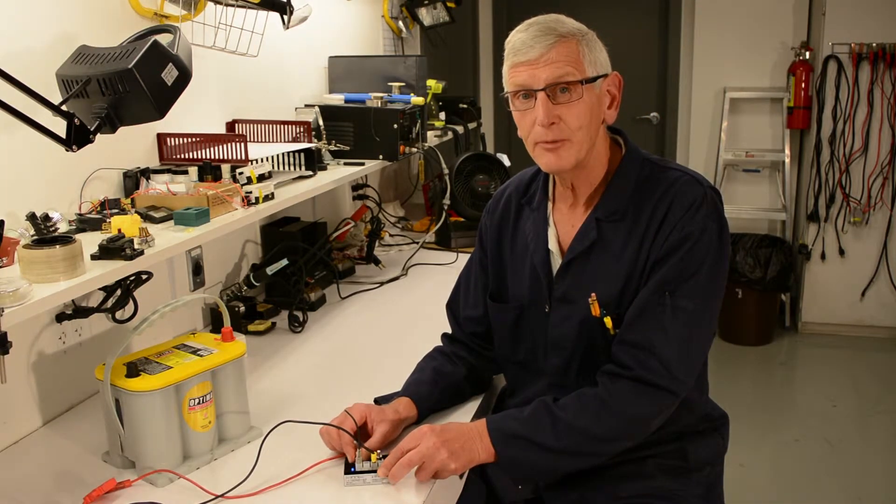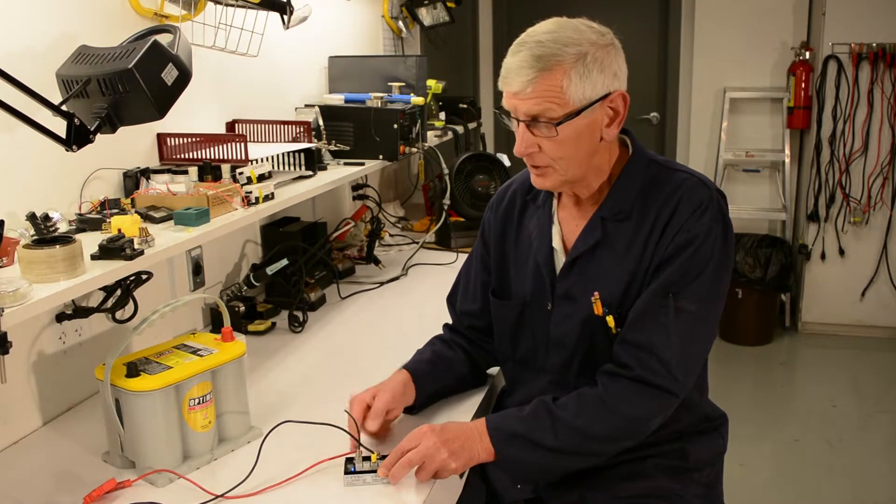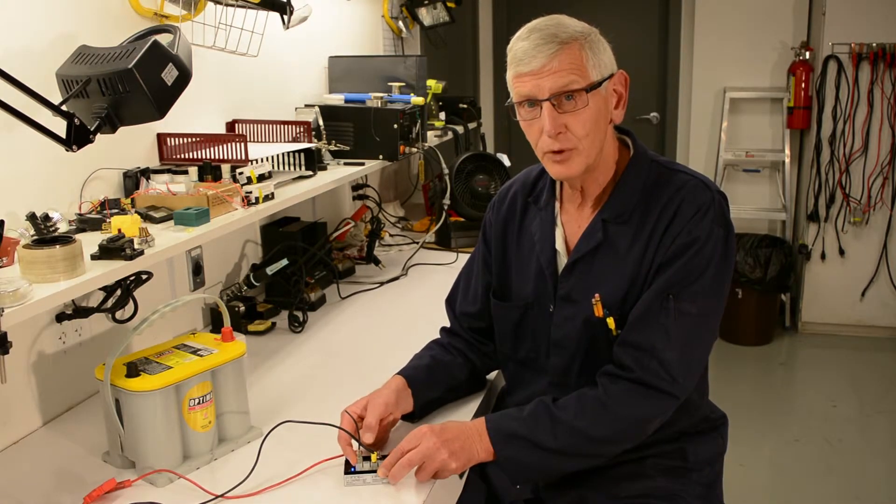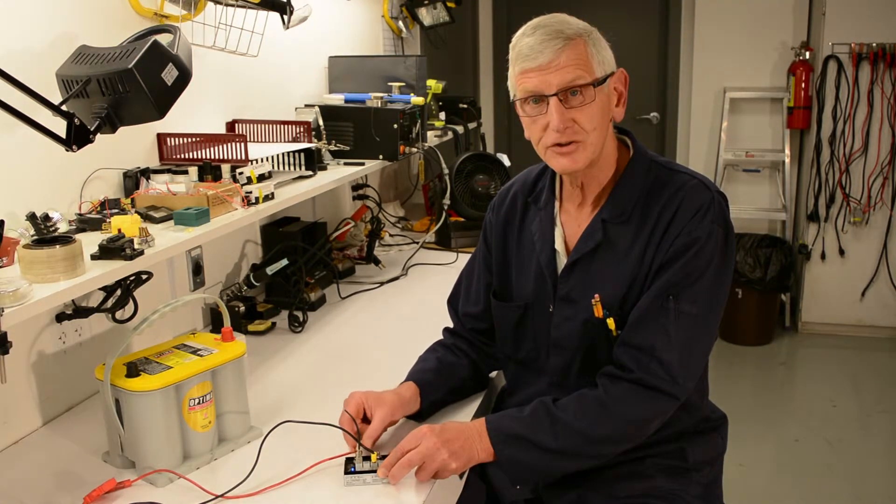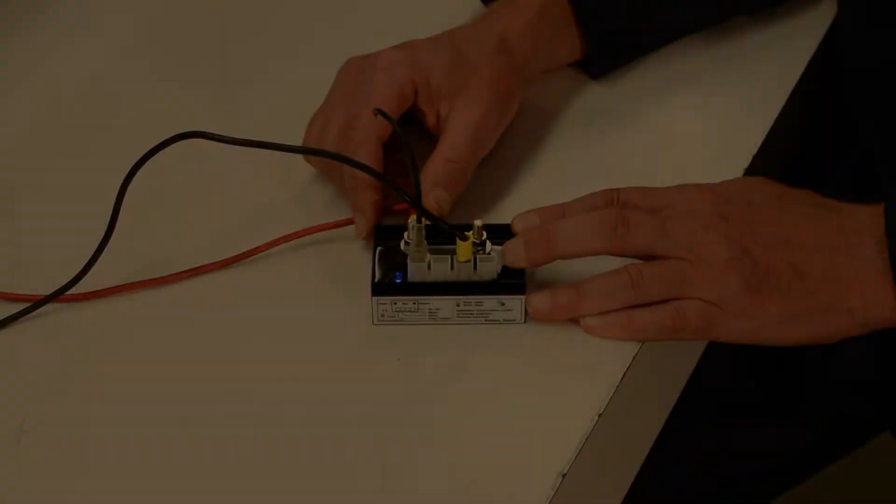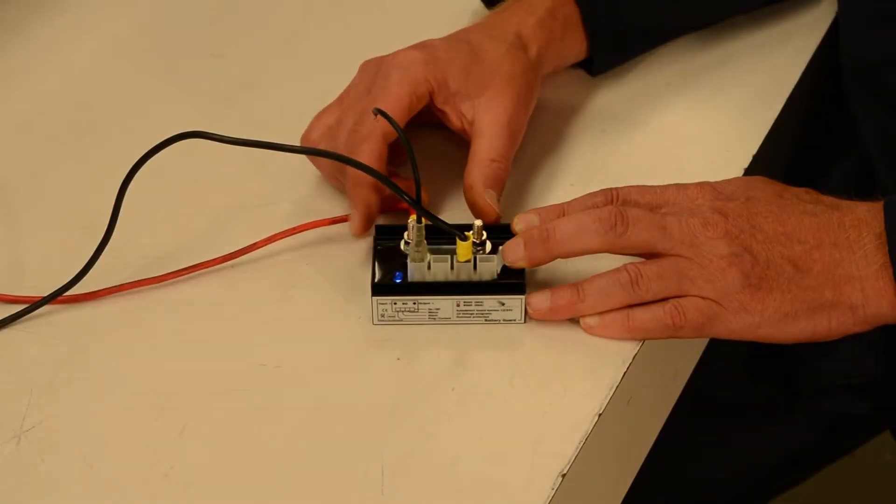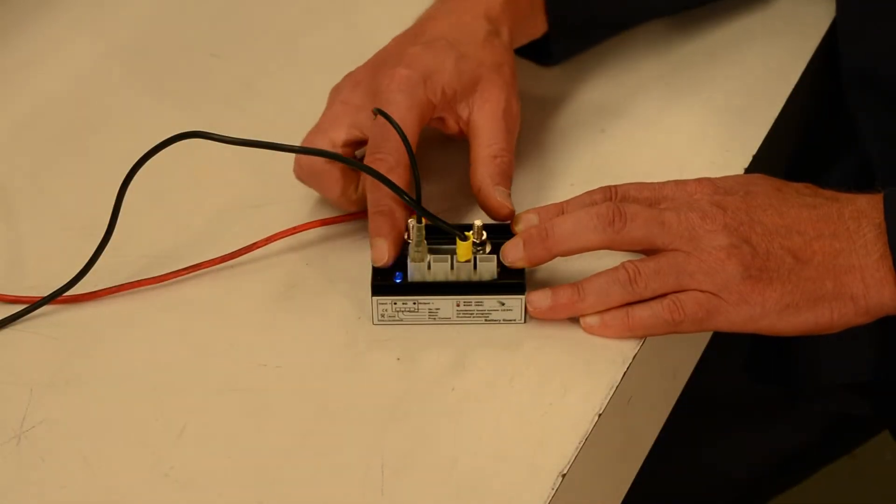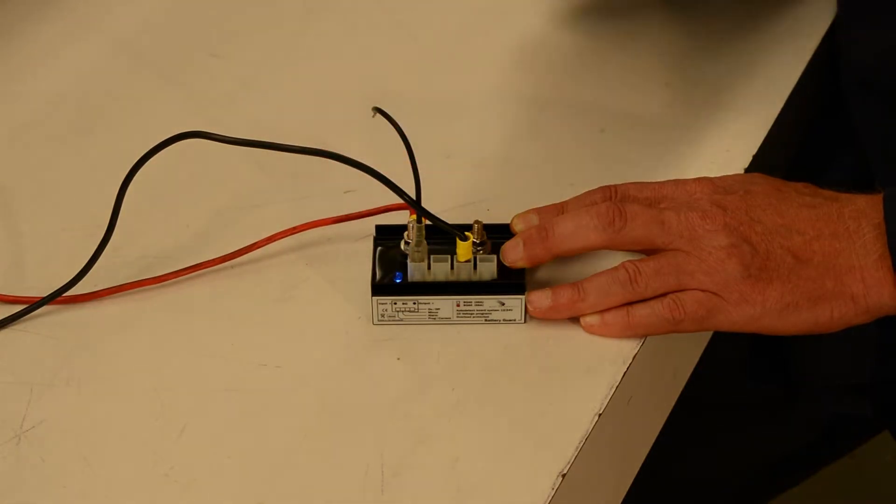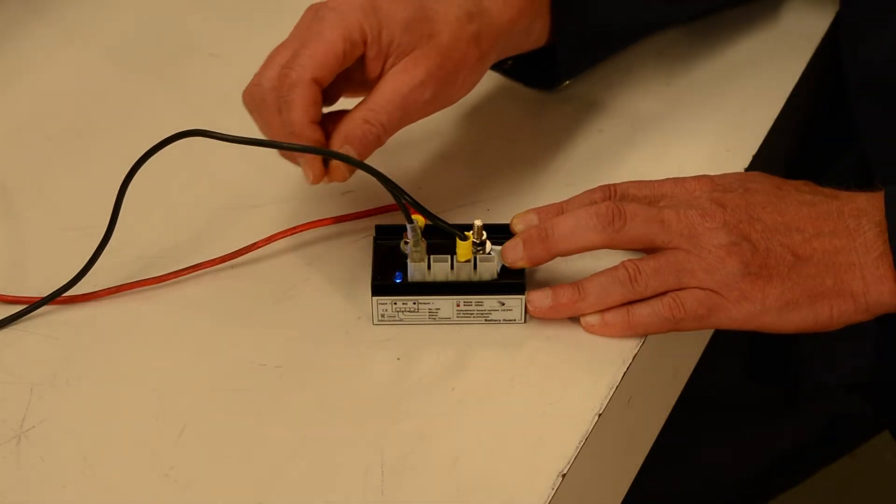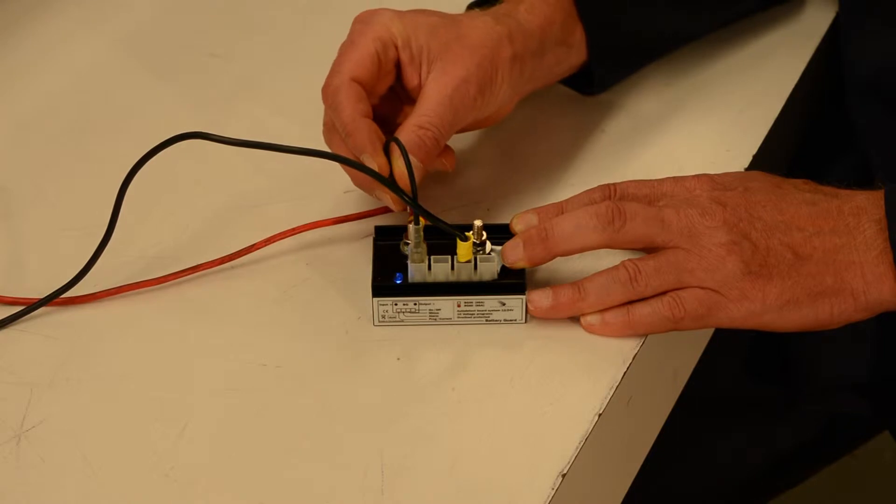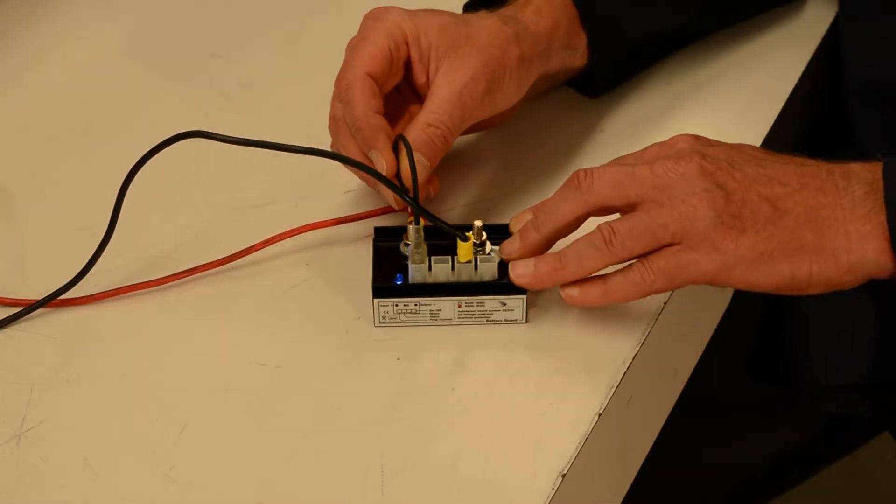So now we're going to program the battery guard which is pretty simple using the number one program key and we're just going to touch it to the DC input. So again, the normal on status of the battery guard is with the blue LED. To program it, we simply touch the programming pin to the DC input when we have the minus attached as well.